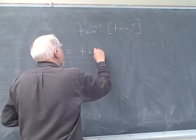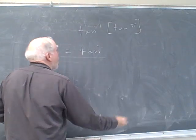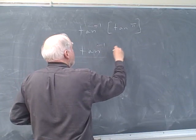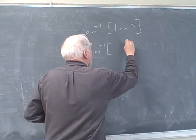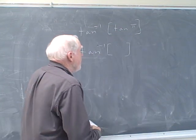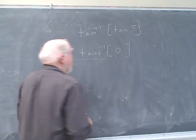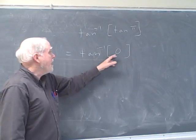This equals the tangent inverse. And if you remember your unit circle, you'll know that the tangent is sine over cosine. The sine of pi is 0, and cosine is negative 1, so it's 0. The tangent of pi is 0. We're not going to get pi.